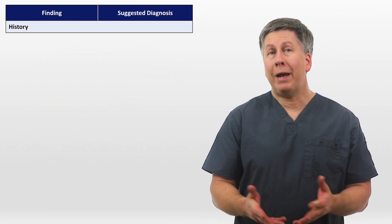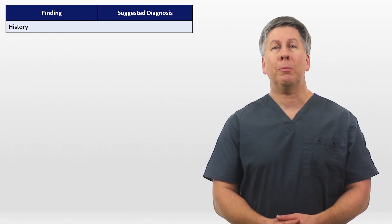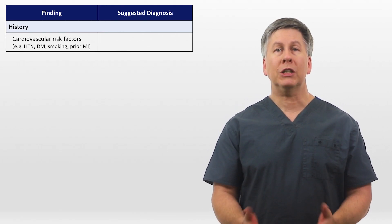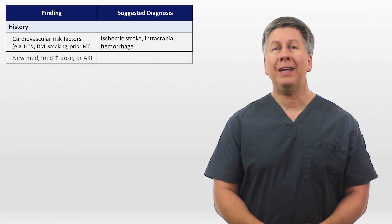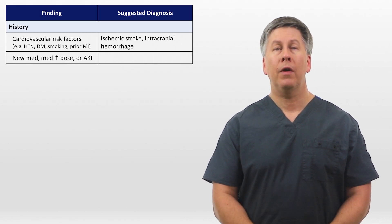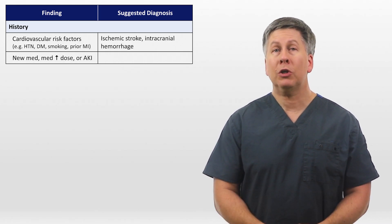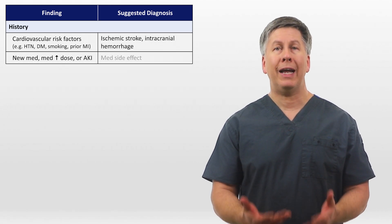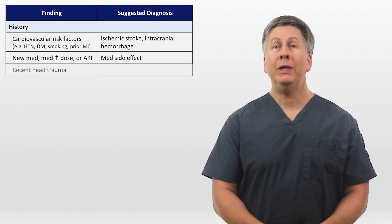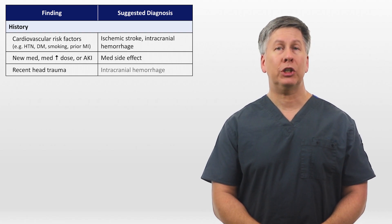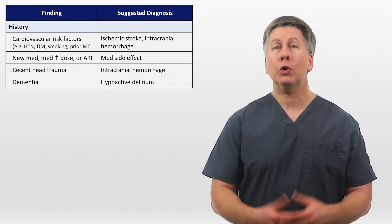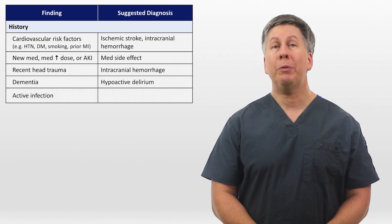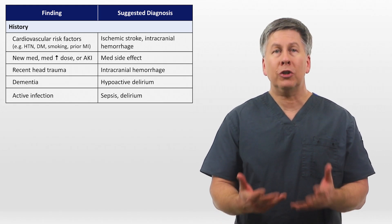Due to the patient's mental status, the history can only consist of things obtained from chart review. Does she have cardiovascular risk factors, which would suggest either a stroke or hemorrhage? Has she been recently started on any new medications or received a higher dose? Or has she recently developed acute kidney injury, which could reduce the clearance of a medication she has been on for a while? Recent head trauma suggests the possibility of an intracranial bleed. Dementia is a huge risk factor for hypoactive delirium. If she currently has an active infection, she could be developing sepsis, and infection is also a delirium risk factor.